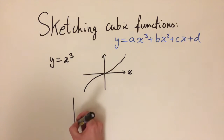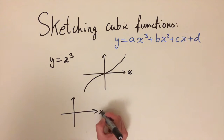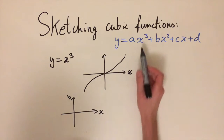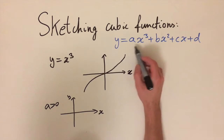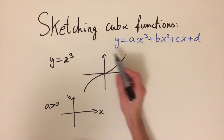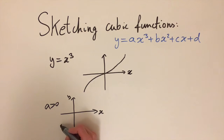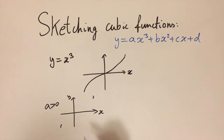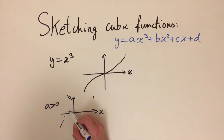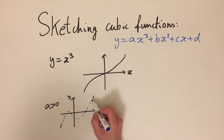We can divide the cases into two cases. If a is positive, so we have a positive x cubed term, then the graph is going to have its corners in opposite quadrants — bottom left and top right. When x is really negative then y is also going to be negative, and when x is positive, y is also going to be positive. You're going to get some behaviour in the middle, and it might look something like this, where it curves about and ends up in the corners.